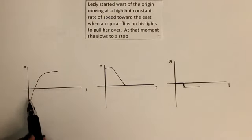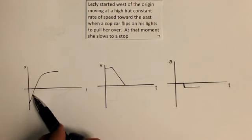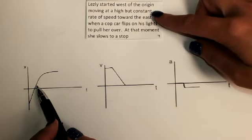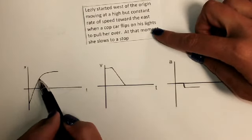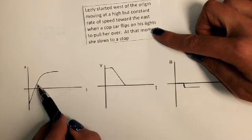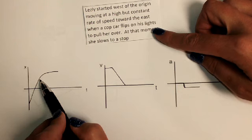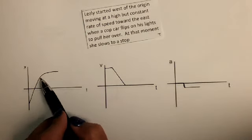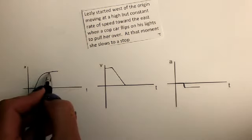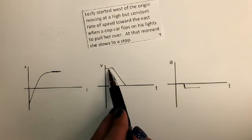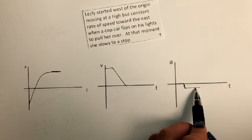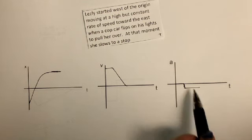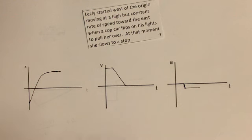Here's our answer. She starts west of the origin, moving at a high but constant rate of speed toward the east, so I gave it a pretty steep slope. Then she passes a cop car that flips on his lights to pull her over, so she slows to a stop. On the position-time graph: high constant speed in the positive direction followed by a decreasing slope as her velocity drops to zero. On the velocity-time graph: constant positive velocity, then slowing to zero. No acceleration during constant speed, then a constant negative slope giving a constant negative acceleration. I'm going to stop this video and make a second one — the scenarios get progressively harder, so you should watch the second video.